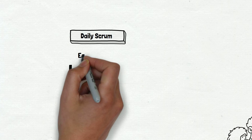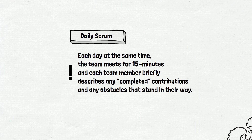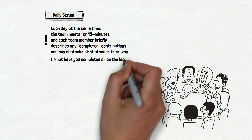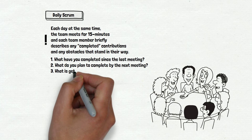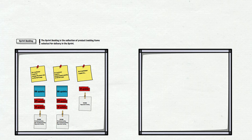The definition sounds like this: each day, at the same time, the team meets for 15 minutes and each team member briefly describes any completed contributions and any obstacles that stand in the way. It is another meeting, very often called a stand-up. It is short and should take 15 minutes or less. Even if it's not required, on most teams each team member answers three questions: What have you completed since the last meeting? What do you plan to complete by the next meeting? What is getting in your way? To visualize the result of these ten days of work, we need another board. There is a thing called the burndown chart or Kanban board — very useful tools to track daily progress. We are old-fashioned and use boards.